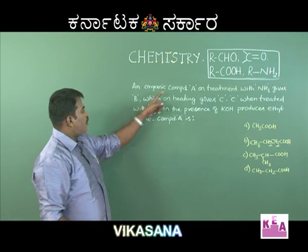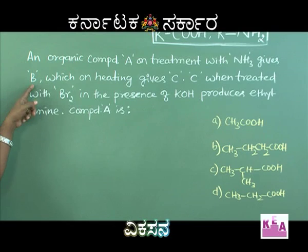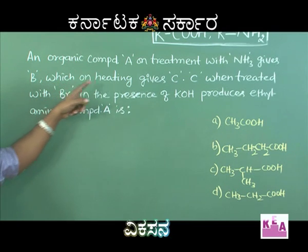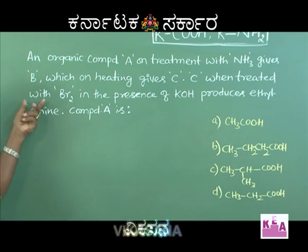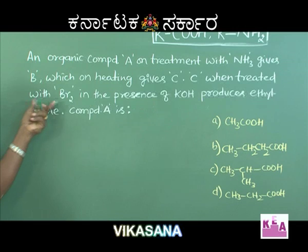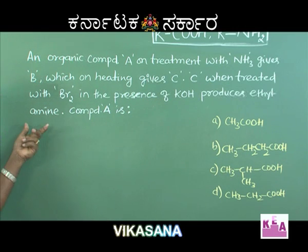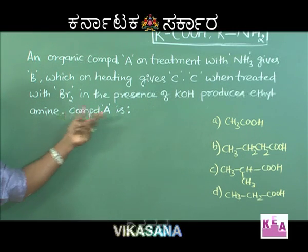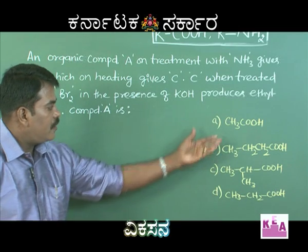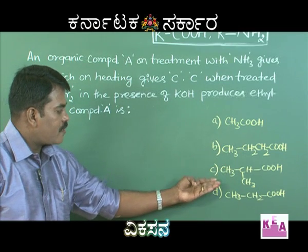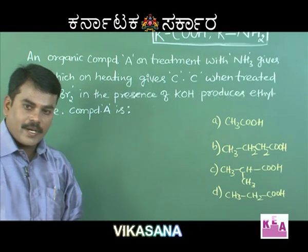The next question: an organic compound A, on treatment with ammonia, gives B, which on heating gives C. C, when treated with bromine in the presence of KOH, produces ethylamine. What should compound A be? The options are: acetic acid, butanoic acid, 2-methylpropanoic acid, or propanoic acid.